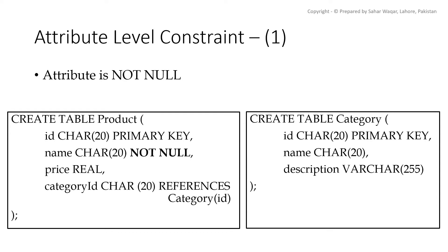This means that while inserting any new tuple in the product table, name cannot be left null. Similarly, we have a product price and a category_id attribute which references our category table using the foreign key constraint. Likewise, the category table is being created using id, name, and description attributes.